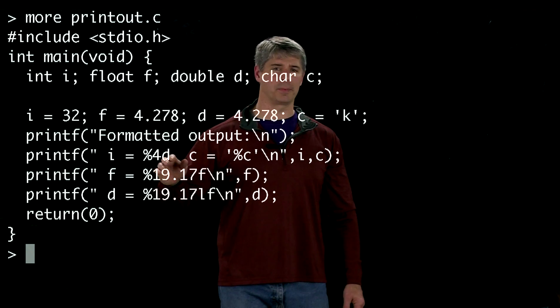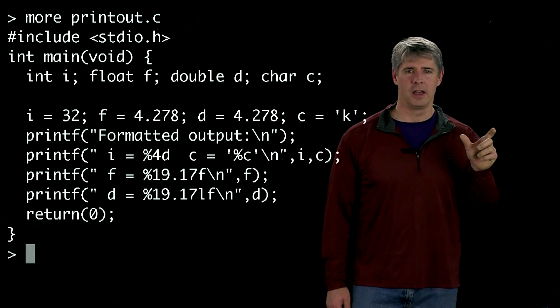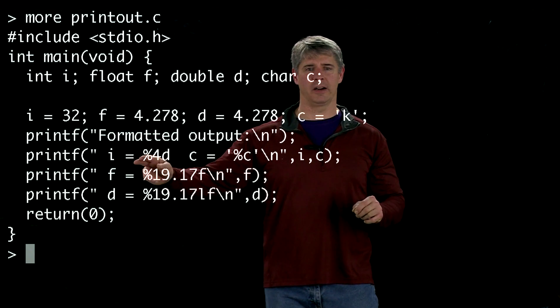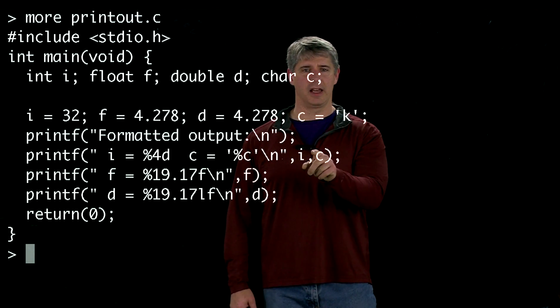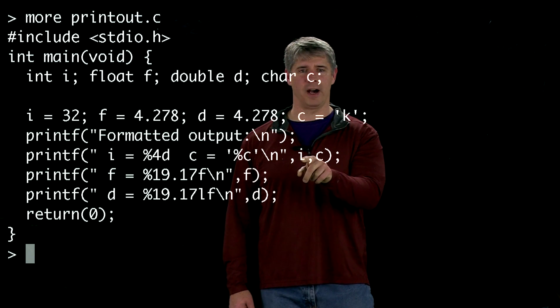And the thing is that every percent sign here has associated with it a variable later on. So after the comma here, we have i, so the first percent sign %4d goes with this i.